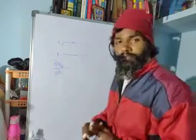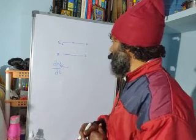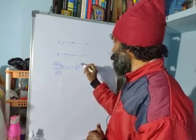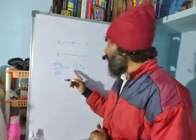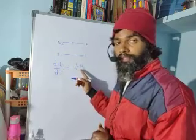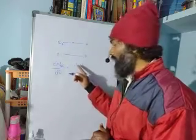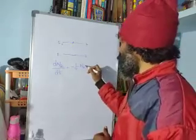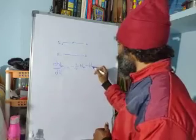We write dn2/dt. The spontaneous emission term contributes minus (1/τ)·n2, where τ is the characteristic lifetime of the upper level — this is equivalent to writing minus A·n2 using Einstein's A coefficient, since A = 1/τ. The stimulated emission term contributes minus W21·n2.